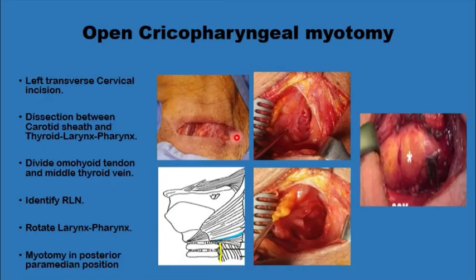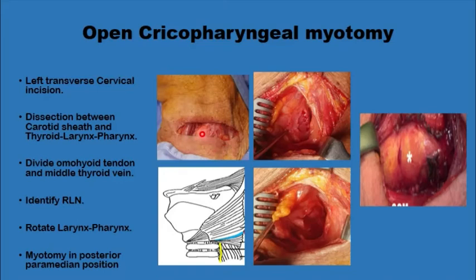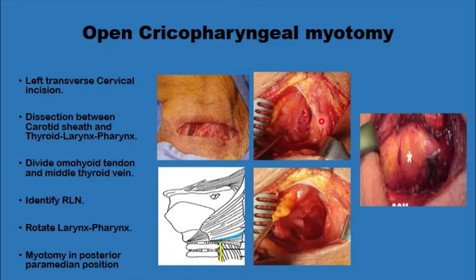The operation starts with a transverse cervical incision, almost always on the left side. The incision is deepened through the platysma, a subplatysmal plane is created, and flaps are elevated. The anterior edge of the sternocleidomastoid muscle is identified, and the carotid sheath is identified just anterior to it. Dissection proceeds between the carotid sheath laterally and the larynx and trachea medially until the pre-vertebral fascia is reached. Two structures cross this area: the omohyoid muscle, divided at its intermediate tendon, and the middle thyroid vein, which is ligated and divided. The larynx is then rotated anteriorly to expose the back of the pharynx and identify the cricopharyngeus muscle.